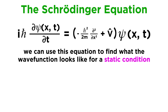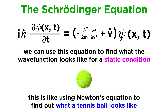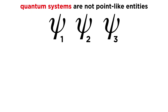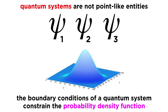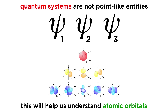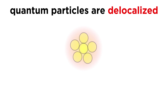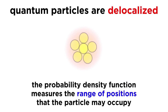We will use it to find what the wave function looks like for a static condition. This would be like saying we will use Newton's equation to find out what a tennis ball looks like — which sounds absurd — but in quantum mechanics objects are described by wave functions, which are not point-like entities. The spatial distribution of quantum objects is determined by the boundary conditions of the system at hand, and it is those conditions that constrain the actual physical shape of the probability density function that governs any quantum object. Grasping this idea will allow us to understand things like atomic orbitals with much greater depth. We must internalize that a quantum particle is delocalized, and the probability density function is a measure of the range of positions it occupies, determined by boundary conditions. This is where the wave-like nature of quantum particles becomes indispensable.